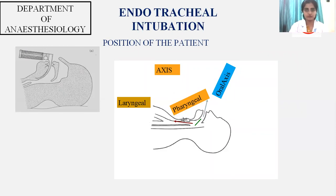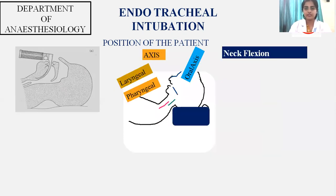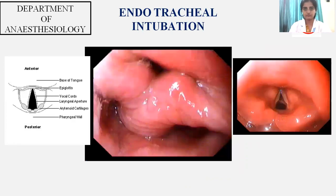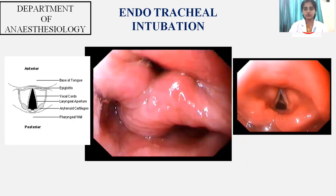For endotracheal intubation, the position of the patient is very important. You need to align the laryngeal axis, the pharyngeal axis, and the oral axis in one line. When the neck is flexed and extension of the head is performed, you get the proper sniffing position for carrying out laryngoscopy and inserting an endotracheal tube. While doing laryngoscopy, you will observe the vocal cords — the two white structures — beyond which you need to pass your endotracheal tube.